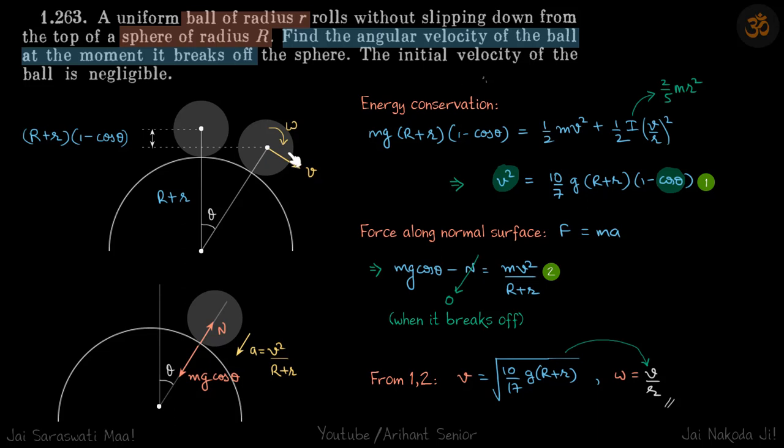Now since it's rolling, angular velocity and velocity are related as v = ωr. So let's find the velocity. And also, because the normal reaction is going to be zero, we are going to write the force equation in this direction. So these are the two things we're going to do.